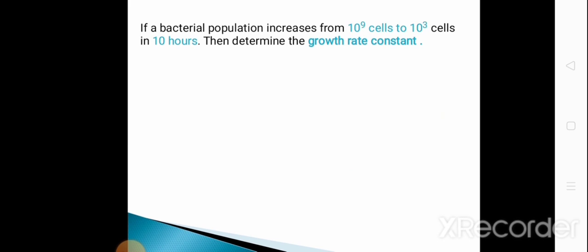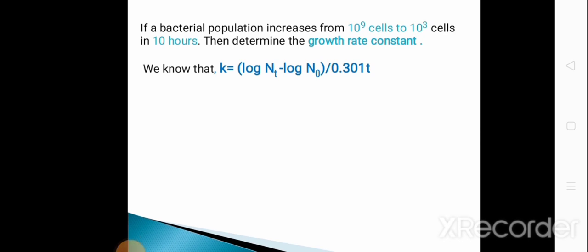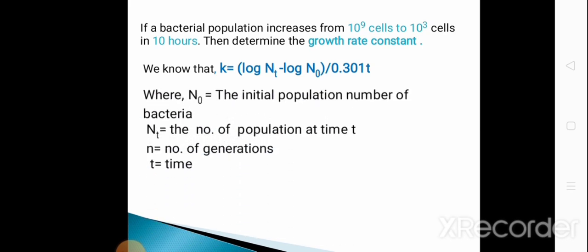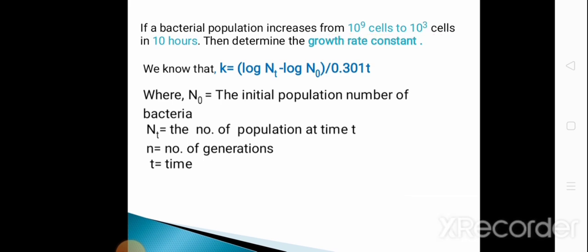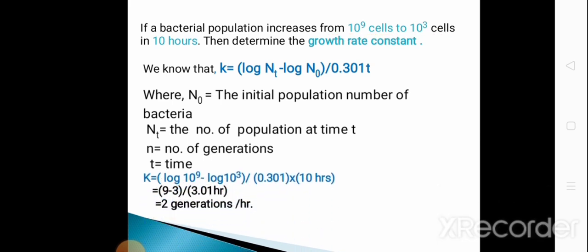Next question: if a bacterial population increases from 10³ cells to 10⁹ cells in 10 hours, determine the growth rate constant. We use the formula: k = (log Nt − log N₀) / (0.301 × t), where k is the growth rate constant, N₀ = 10³, Nt = 10⁹, and t = 10 hours. Putting in these values, the growth rate constant k = 2 generations per hour.